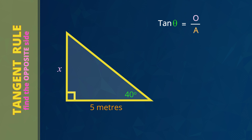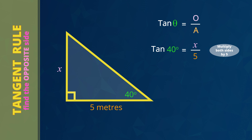In this first example we will calculate the vertical height of this jump. It's the opposite side that we mark with an X. The two things we already know are the size of the angle of 40 degrees and the length of the adjacent side of 5 meters. The first step is to write the tan rule: tan theta equals opposite side divided by adjacent side. Next, substitute the numbers that we know. Angle theta is 40 degrees, the opposite side is marked with the letter X because that's what we're trying to find, and the adjacent side is 5 meters.